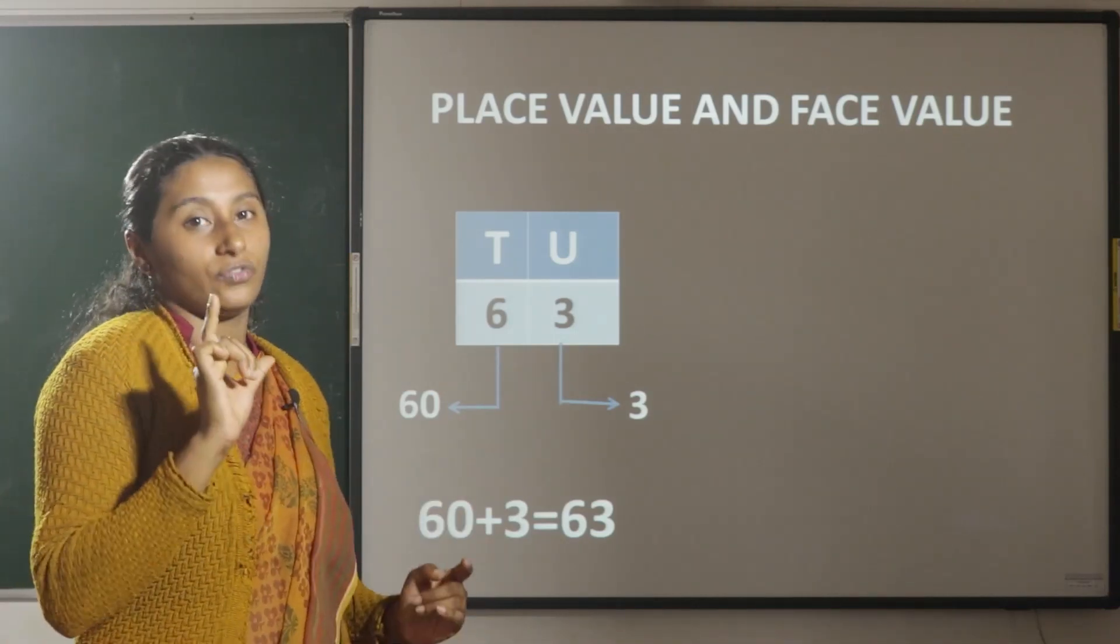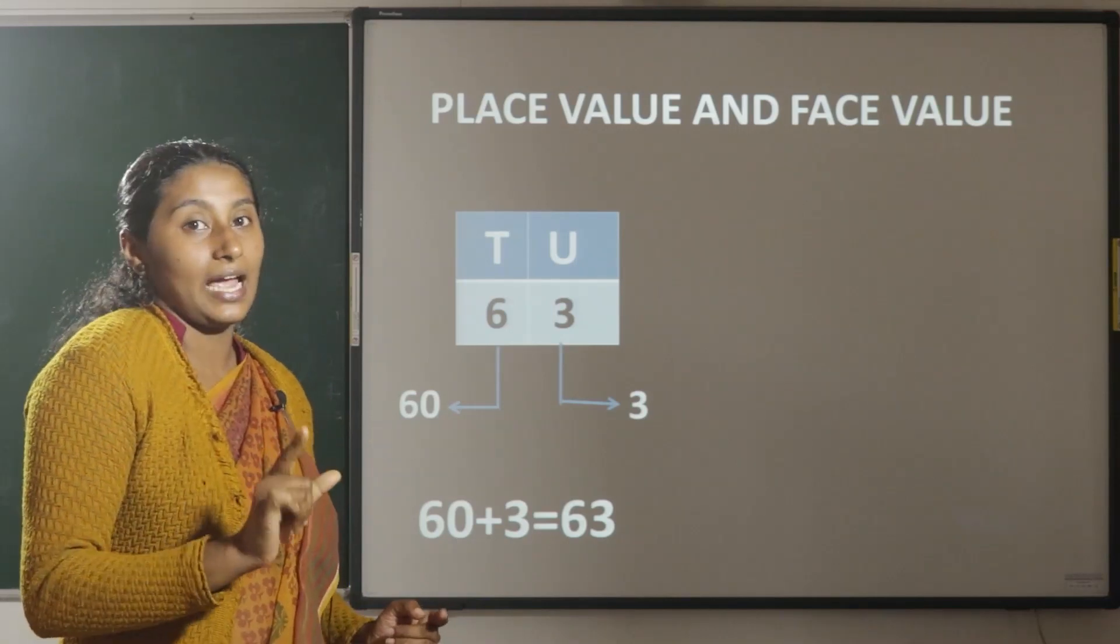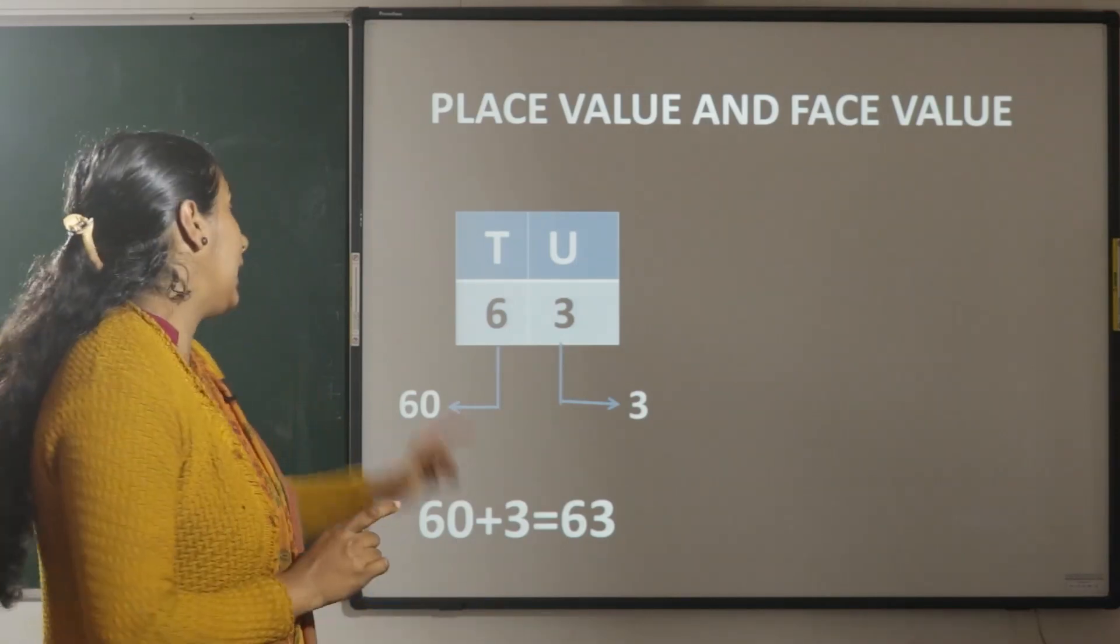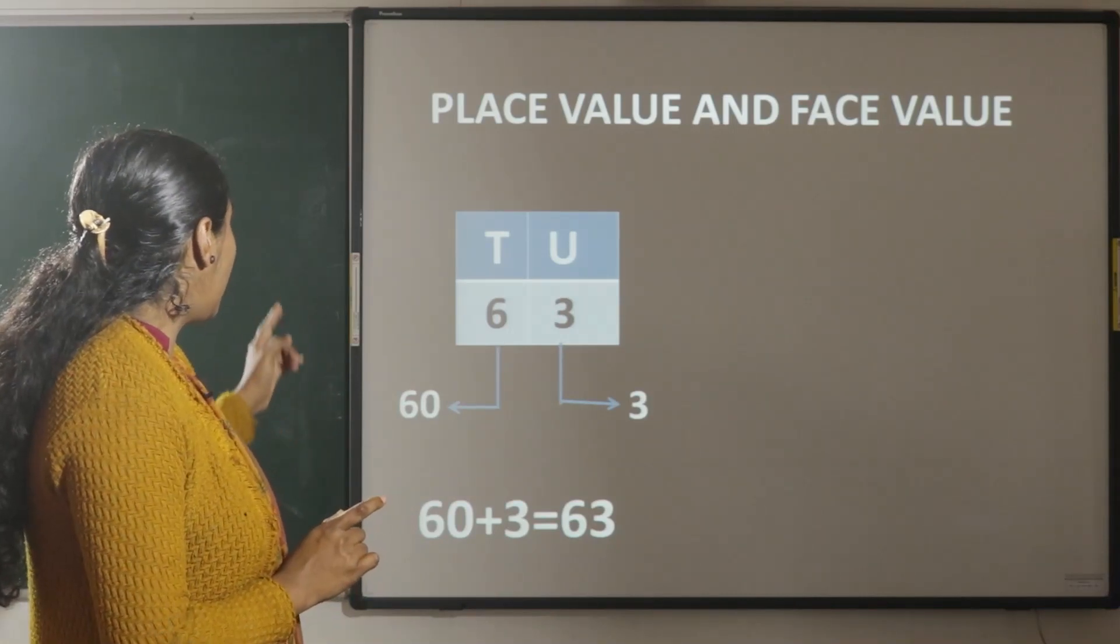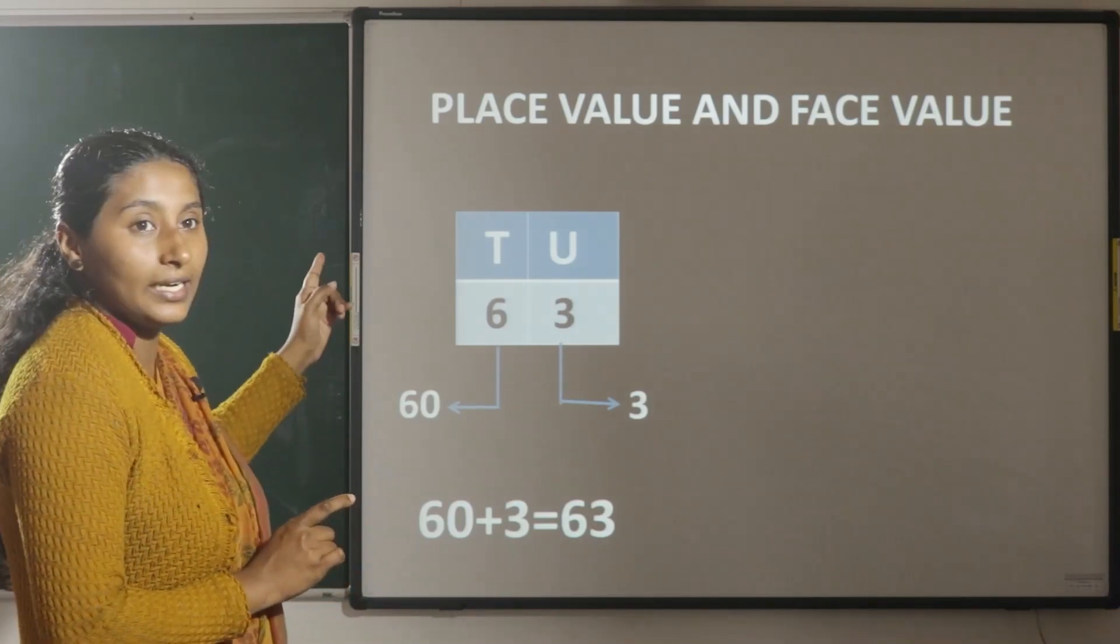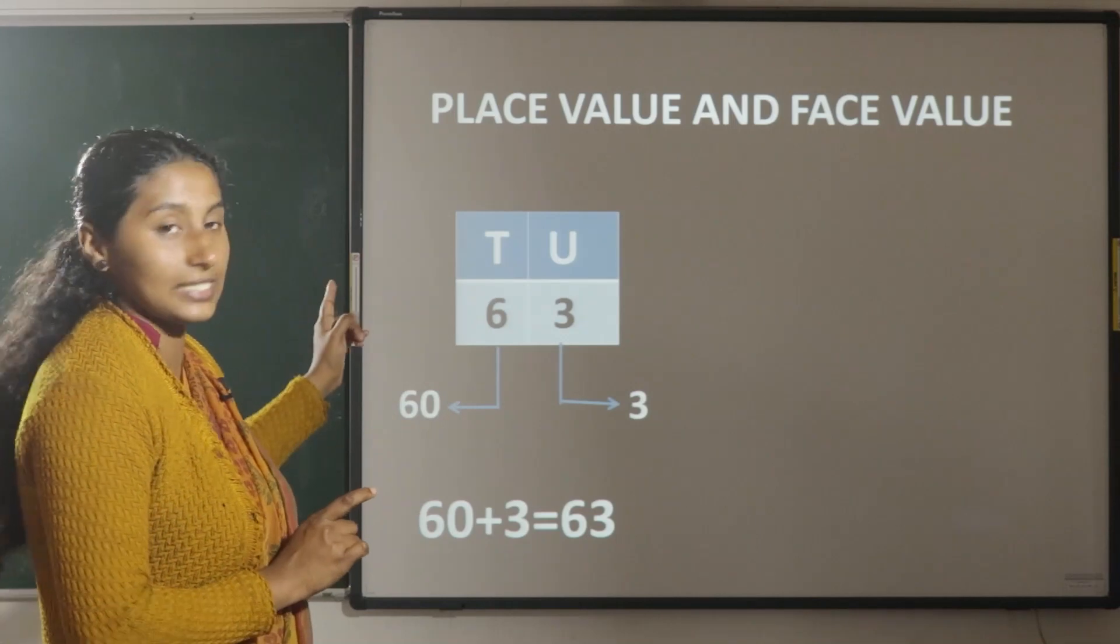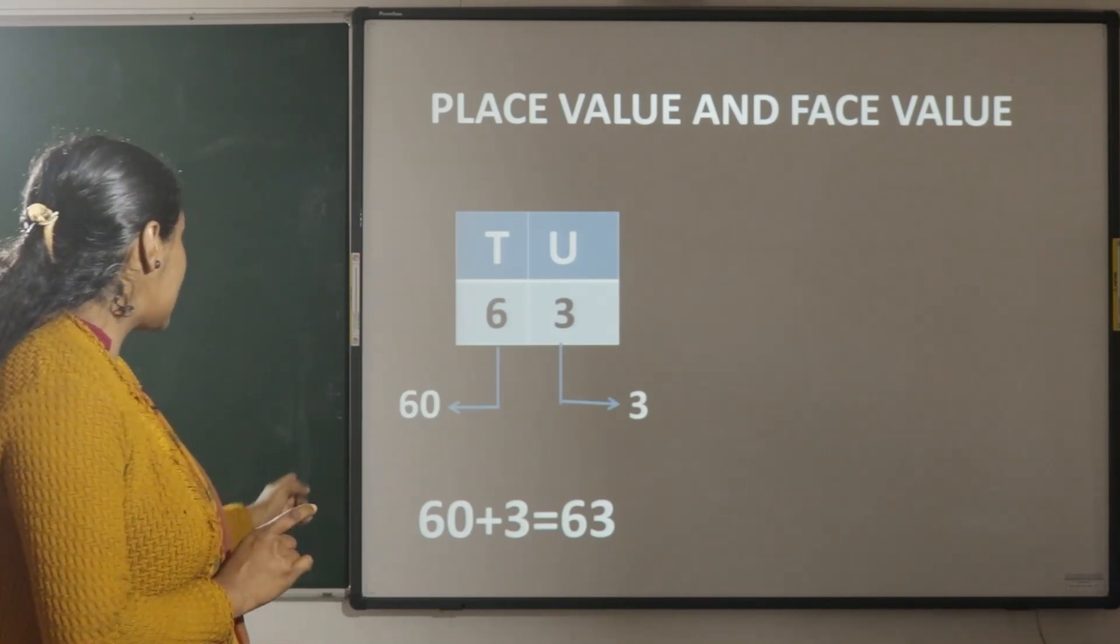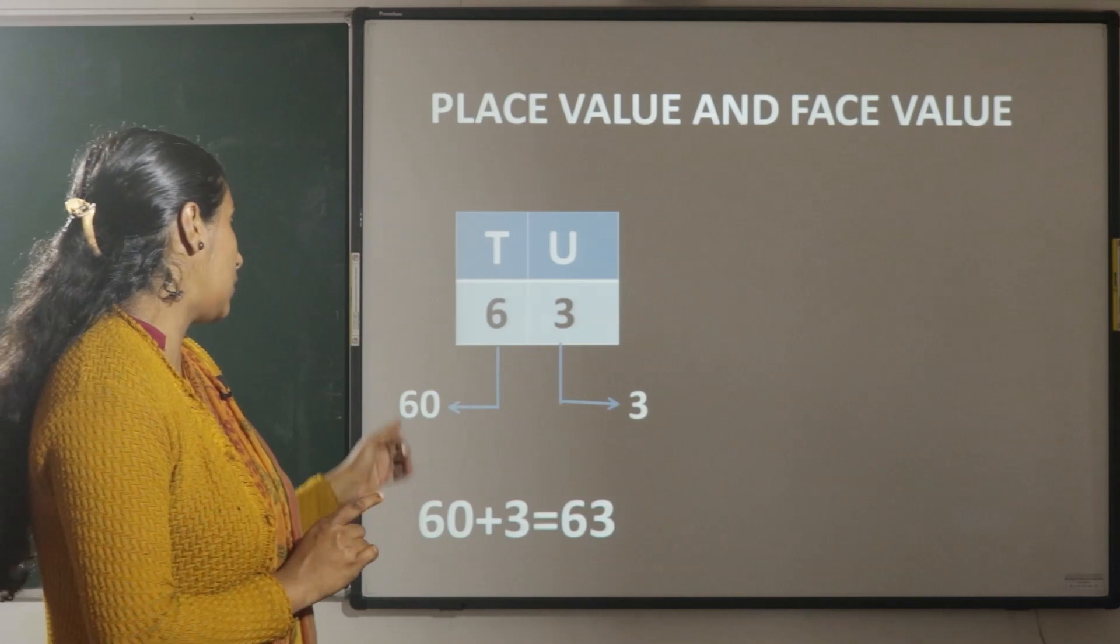The face value of 6 is 6 and the place value of 6 is 60. There are 60 plus 3, 6 tens and 3 units. 60 plus 3 is 63.